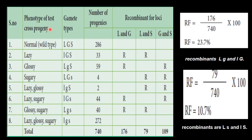Now the test cross is the result. The number of progeny is 740. Out of this, L and G, recombination frequency is 176 by 740 into 100 is equal to 23.7 percent. This is L and G first. Now the 23.7 recombinant frequency is less than 50. So it is linked.